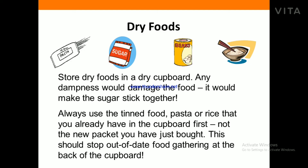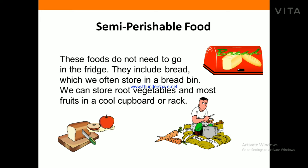Store dry foods in a dry cupboard — any dampness would damage the food; it would make the sugar stick together. Always use the pasta or rice that you already have in the cupboard first, not the new packet you have just brought. This should stop out-of-date food gathering at the back of the cupboard.